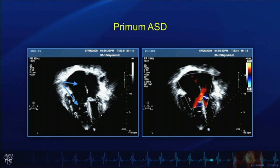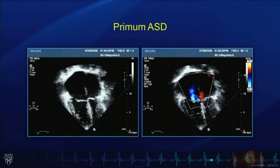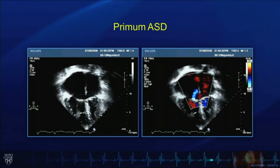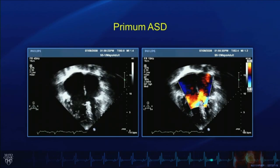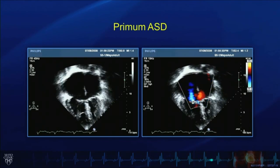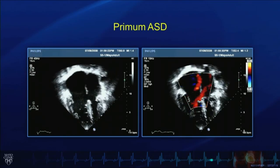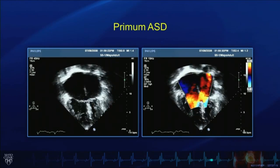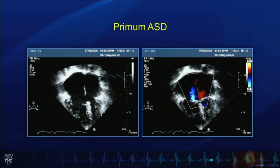Here are some real-time images in apex-down format. The blue arrows on the left panel demonstrate the right atrium on the top and right ventricle on the bottom. As we look at these images in real-time, the atrioventricular valves are at the same level, and there is a large defect in the lower portion of the atrial septum — a primum atrial septal defect. With color flow examination, we can see flow through that primum atrial septal defect, as well as tricuspid regurgitation and some mitral valve regurgitation in this patient.